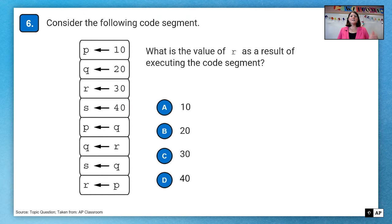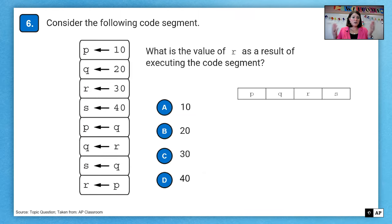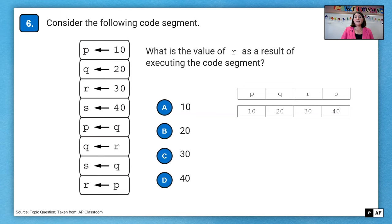Question number six. Consider the following code segment. What is the value of R as a result of executing the code segment? Here's a big chart where we're just assigning values. Remember that arrow means to assign the value of or you can say gets. And so during your exam, you should write this down on your test booklet or on your scrap paper and trace the values of the variables. So here I have P, Q, R, and S. And those first four lines of code set them to 10, 20, 30, 40.